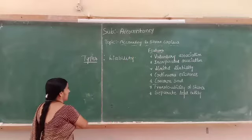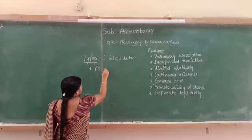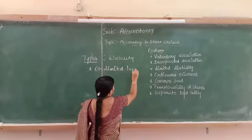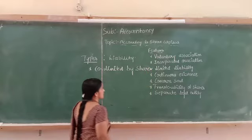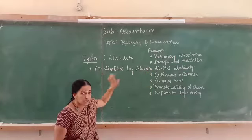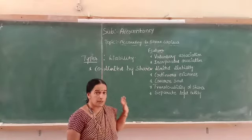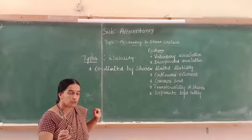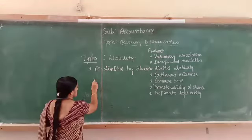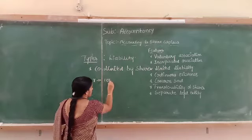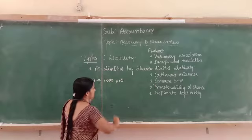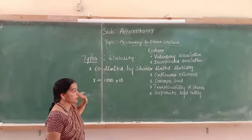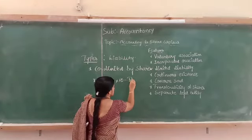There are three types of companies. The first is company limited by shares. Company limited by shares means the shareholder's liability is limited to the extent of unpaid amount of share capital. For example, if Mr. Yars has subscribed for 1,000 shares of Rs. 10 each, the total amount he has to pay is Rs. 10,000. If Mr. Yars paid Rs. 6,000, then his liability will be for Rs. 4,000.